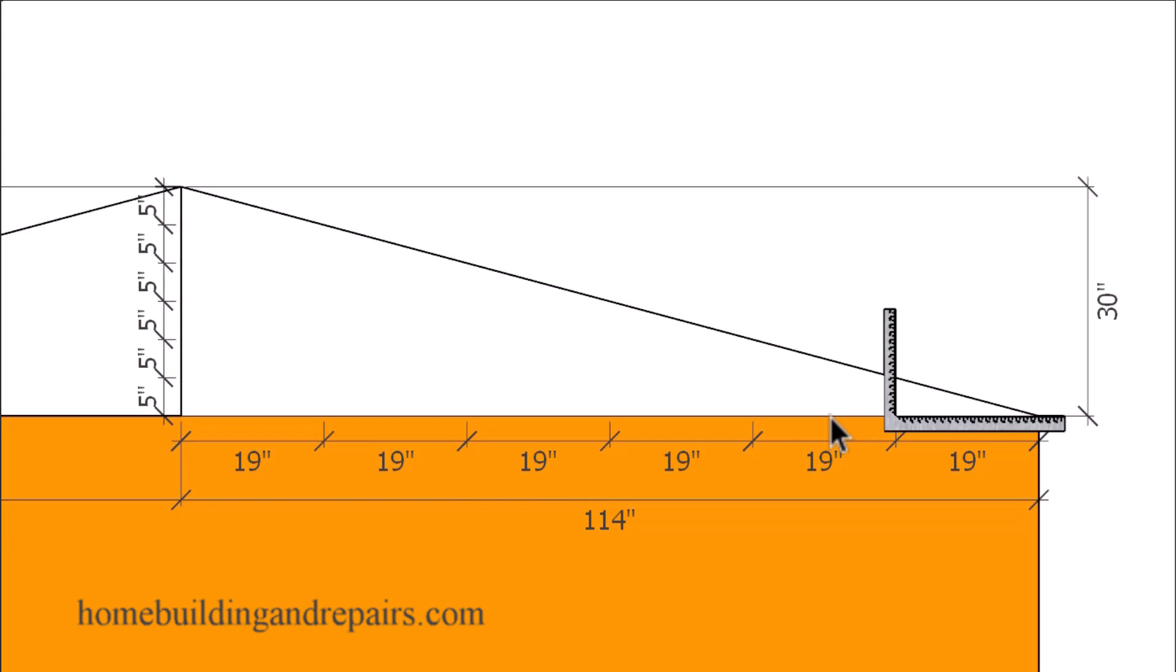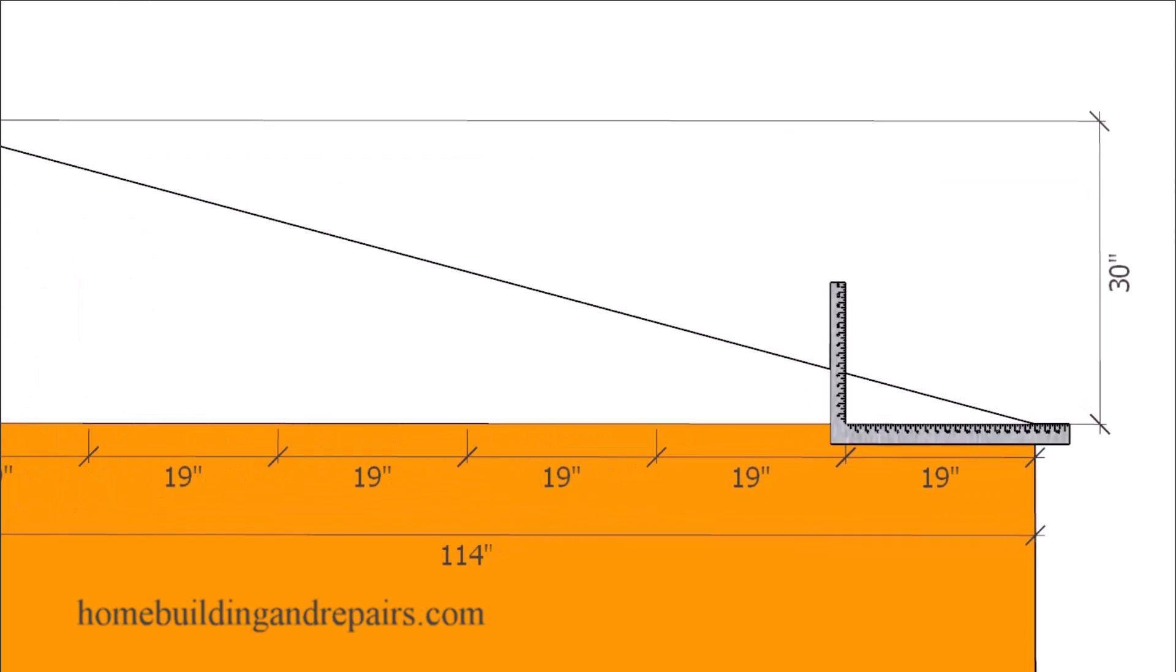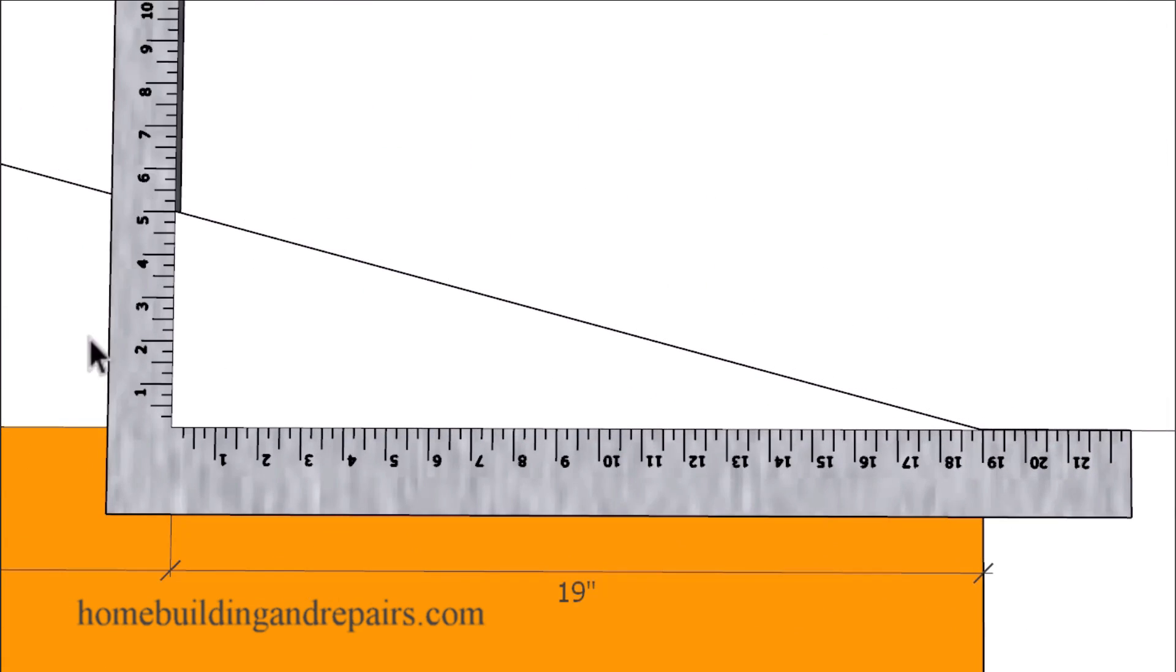Again, I'm trying to make your job as easy as it possibly can. And this method right here might be that. And to set the framing square up, all we need to do is set the framing square up at five on one side and 19 on the other side.